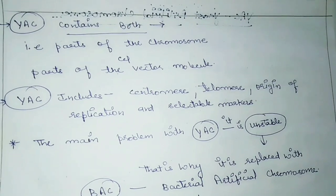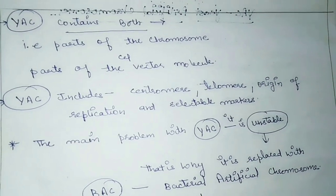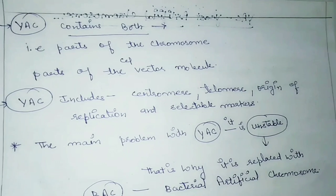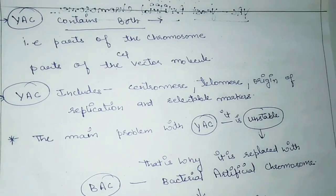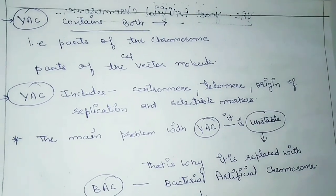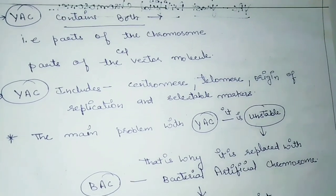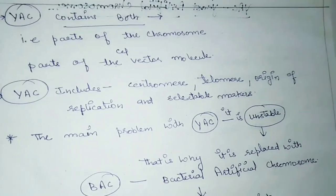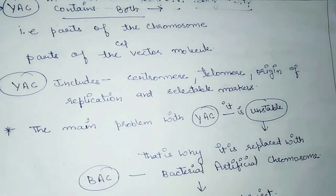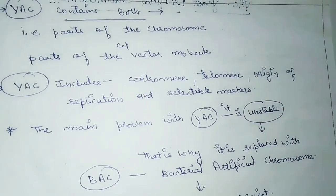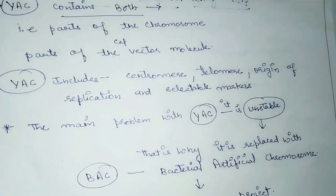YAC contains both parts of a chromosome and parts of a vector molecule. That means at one time it acts as a chromosome and at the same time it acts as a vector molecule. YAC includes all the elements of a normal chromosome such as centromere, telomere, origin of replication, and selectable markers.